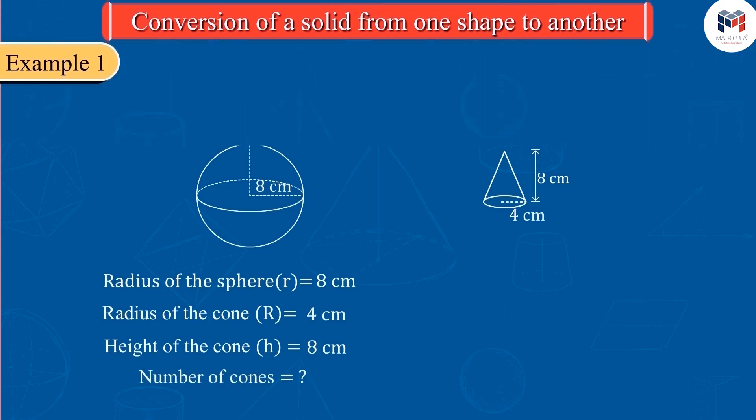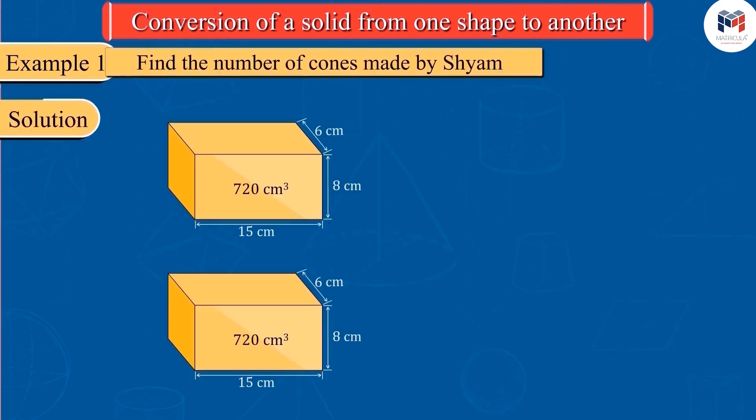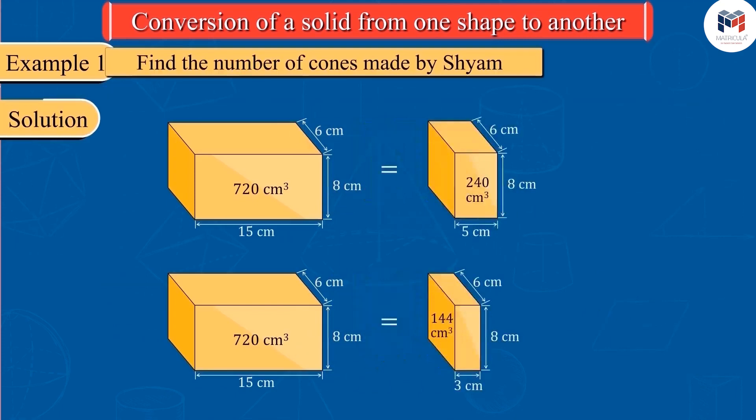We learned in the previous video that if a solid is converted into smaller solids of equal measure, the product of the volume of the smaller solids thus formed and the total number of smaller solids is equal to the volume of the larger solid.